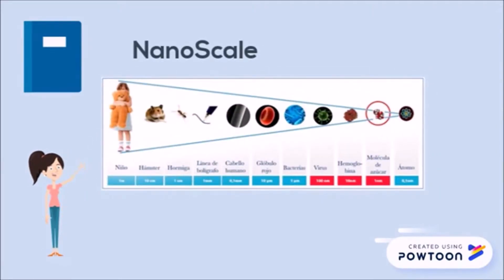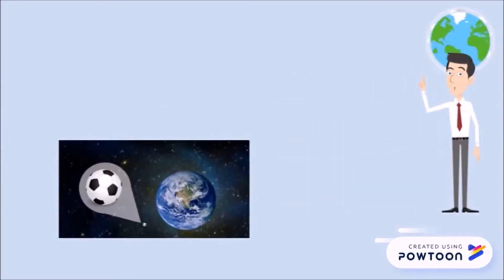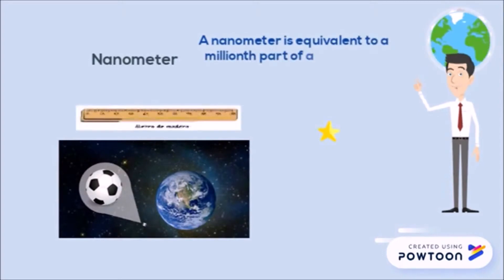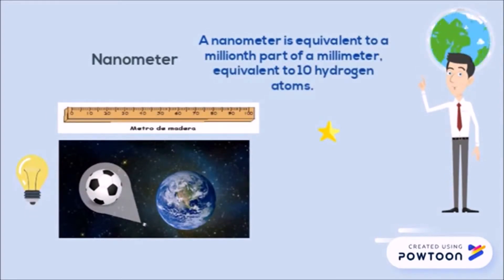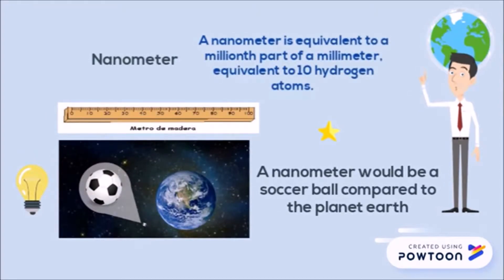Nanoscale runs a dimension from approximately 1 nanometer to 100 nanometers. We have a measure of length that is given as 1 billionth of a meter. Divide a ruler of 1 meter into 1 billion parts. This measure of length is known as a nanometer. A nanometer would be a soccer ball compared to planet Earth.